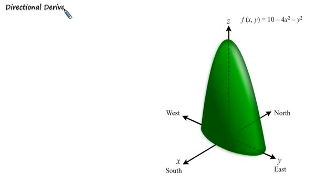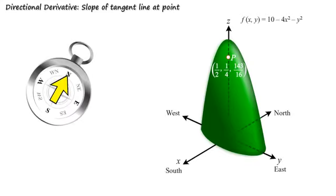A directional derivative is the slope of a tangent line at a point. Let's choose a point on the surface and label it by p. In the single variable case, there are only two directions to choose from, forward and backward along the x-axis. In the two variable case, we have infinite directions to choose from.